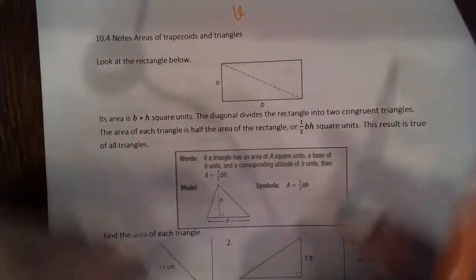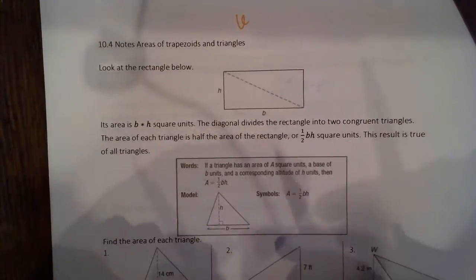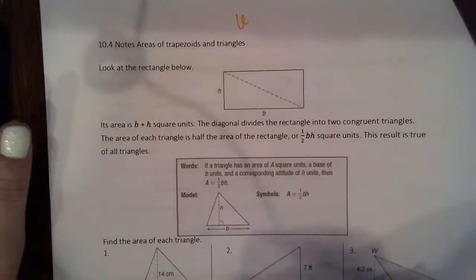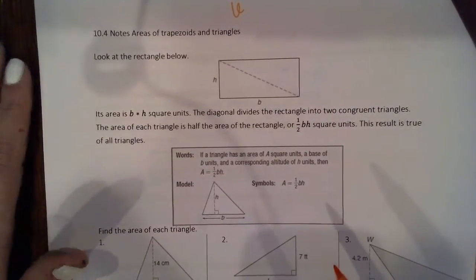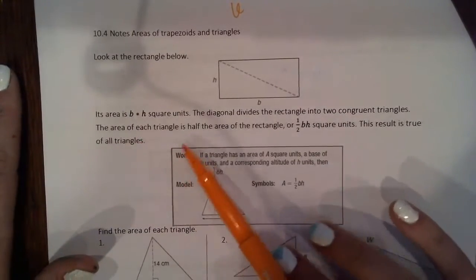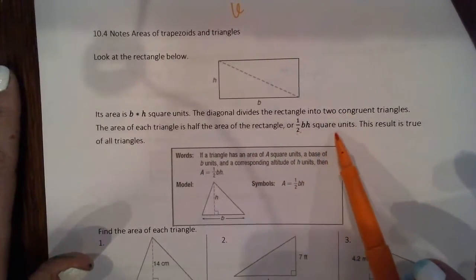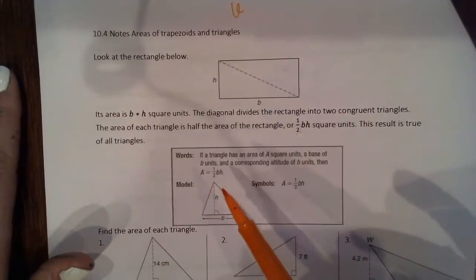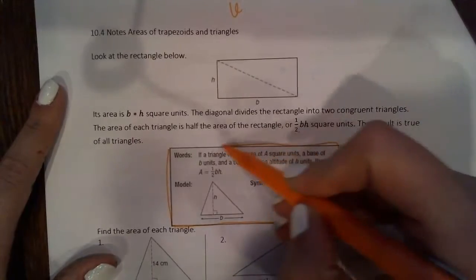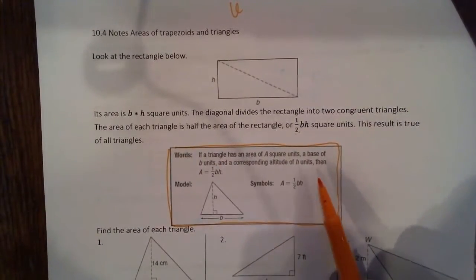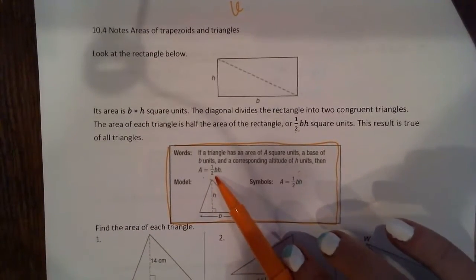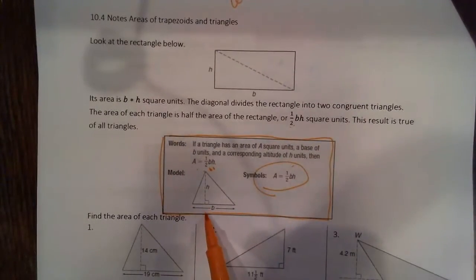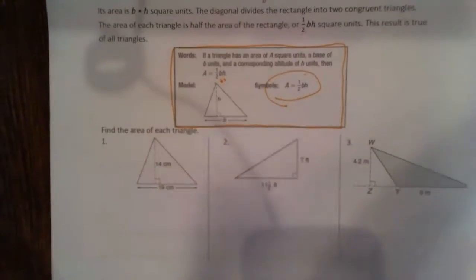Alright, you guys, we have our 10.4 notes here, areas of trapezoids and triangles. Look at this rectangle below. Its area is base times height square units. The diagonal divides the rectangle into two congruent triangles. The area of each triangle is half the area of the rectangle, or one-half base times height square units. The result is true of all triangles. So if a triangle has an area of a square units, a base of b units, and a corresponding altitude of h or height units, then area equals one-half base times height.